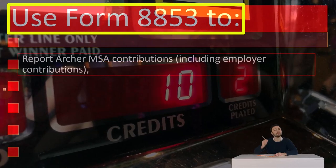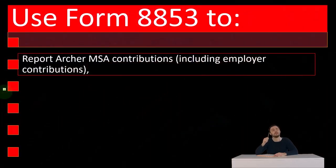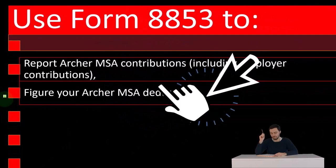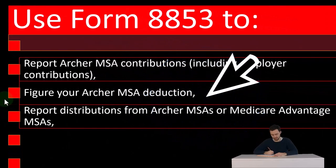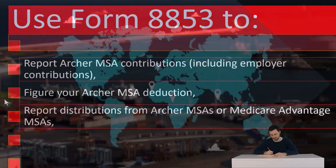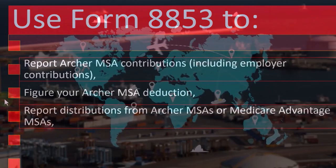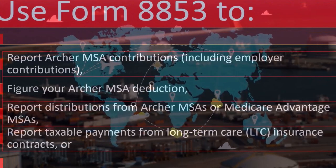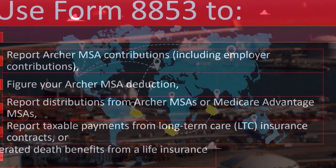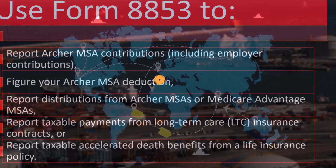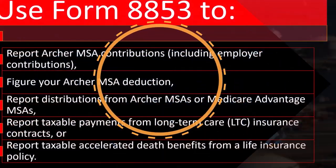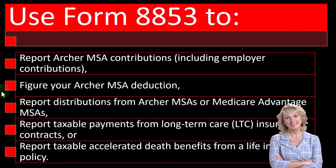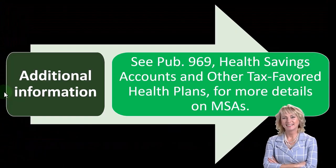Use Form 8853 to report Archer MSA contributions, including employer contributions, and to figure your Archer MSA deduction. It's also used to report distributions from Archer MSAs or Medicare Advantage MSAs, and to report taxable payments from long-term care (LTC) insurance contracts or taxable accelerated death benefits from a life insurance policy. That's when we're going to be using Form 8853.